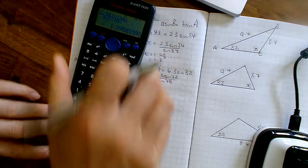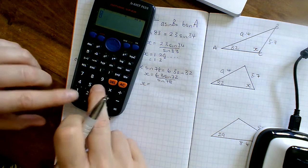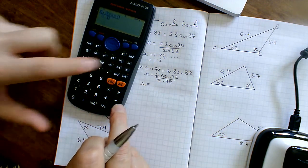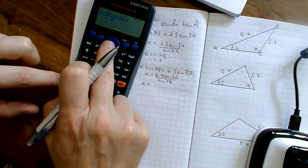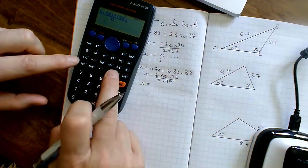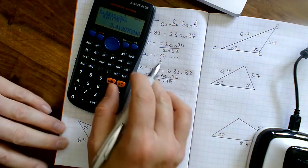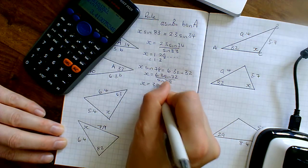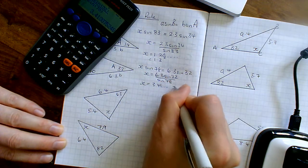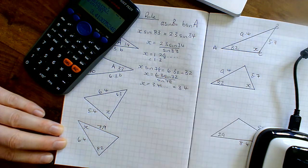X is therefore equal to, grab your calculator, press fraction, 6.3 sine of 32 bracket, over sine of 78. And I've got 3.41, 3.41 goes off rather, 3.4 to 1 decimal place.